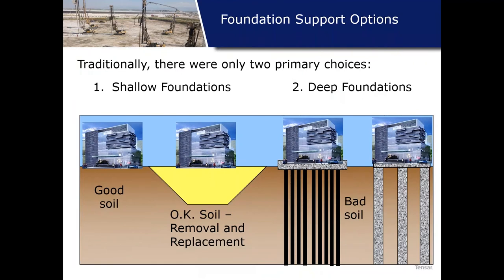When should we use rigid inclusions? Before discussing ground improvement, let's quickly walk through traditional foundation options. If we have good soil, we support the building on shallow foundations — that's obvious. If foundation soils aren't great but get better with depth, maybe we undercut and replace with engineered fill. But at some point those undercuts become cost-prohibited, and we need to extend a foundation system through bad soils and tap into competent material below — using drilled shafts, driven piles, or micropiles.